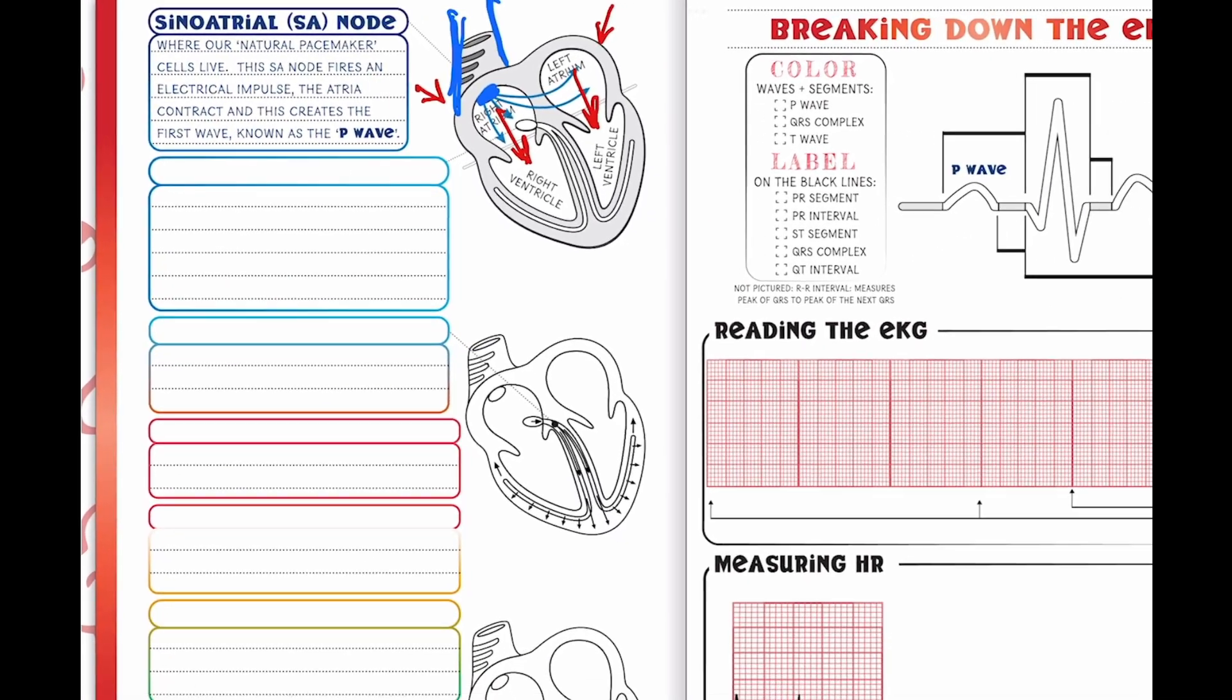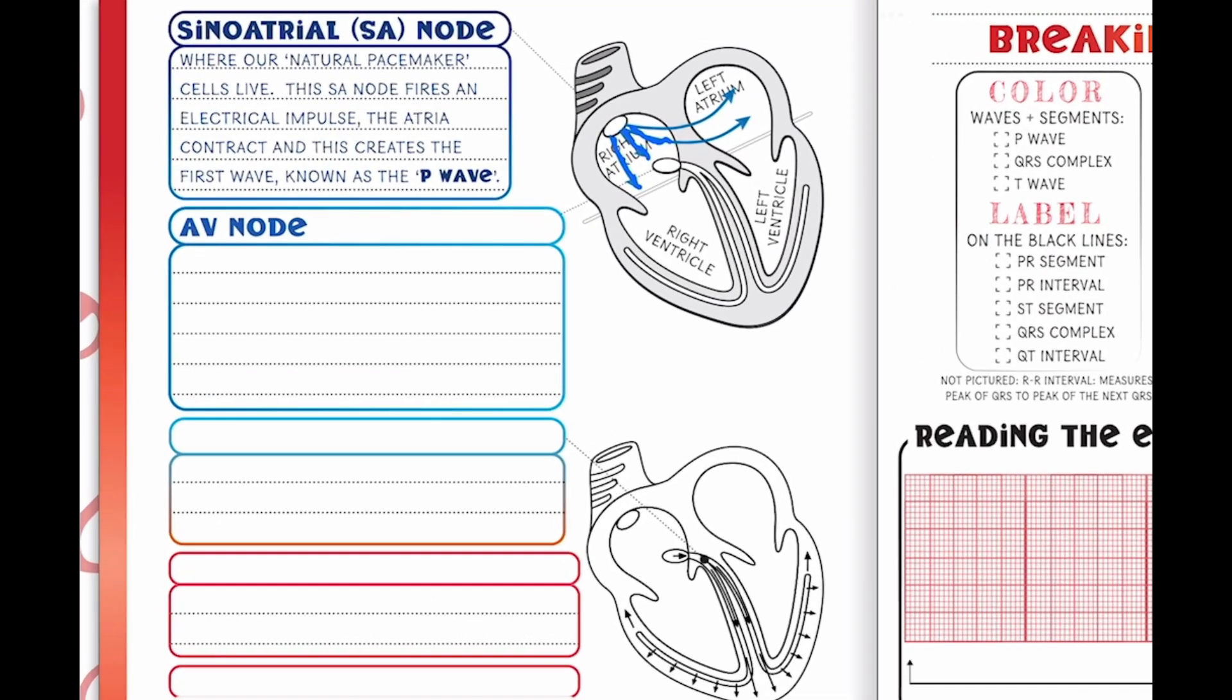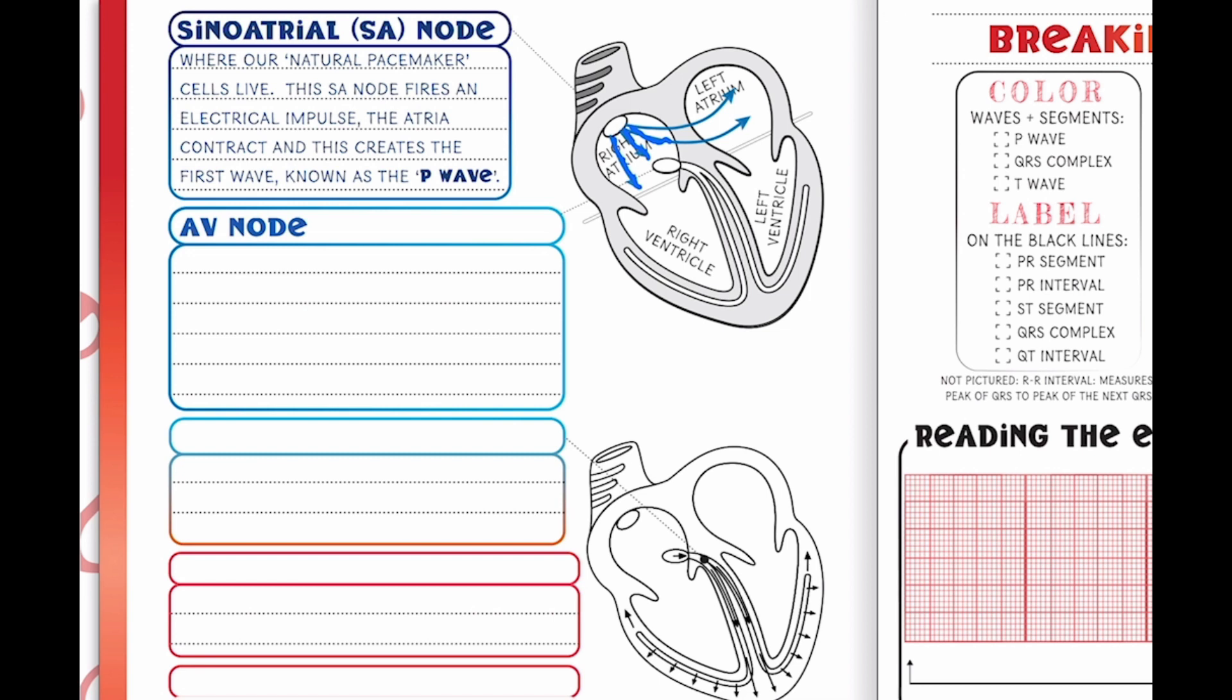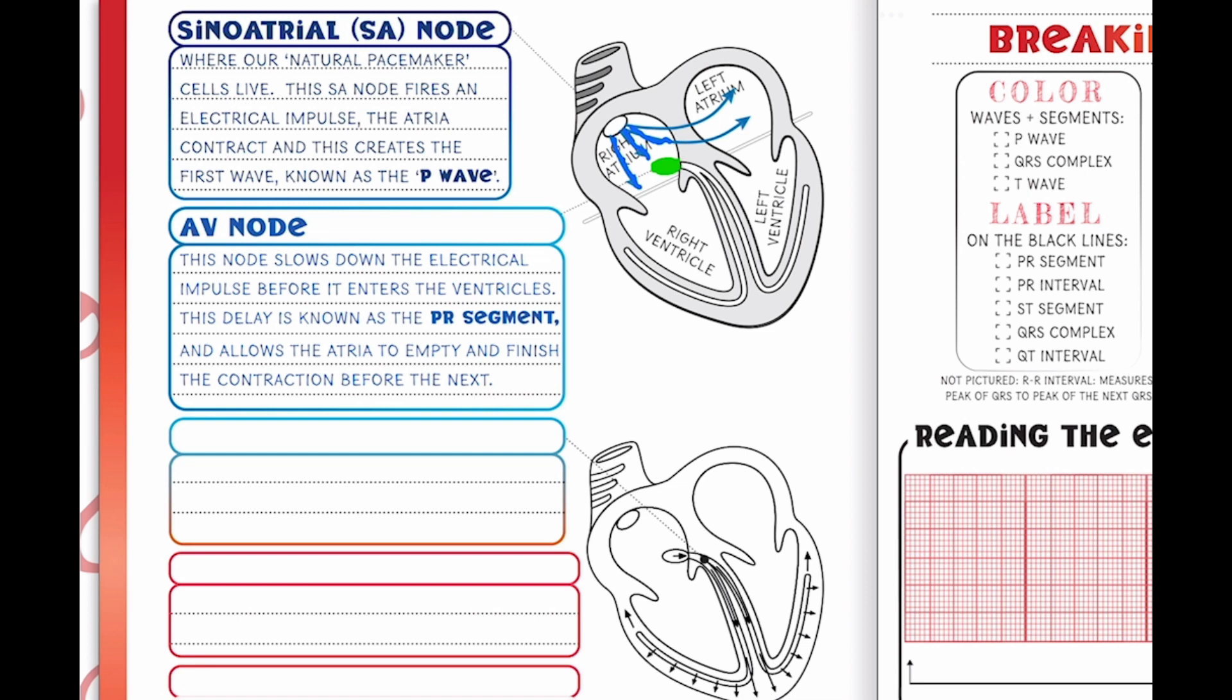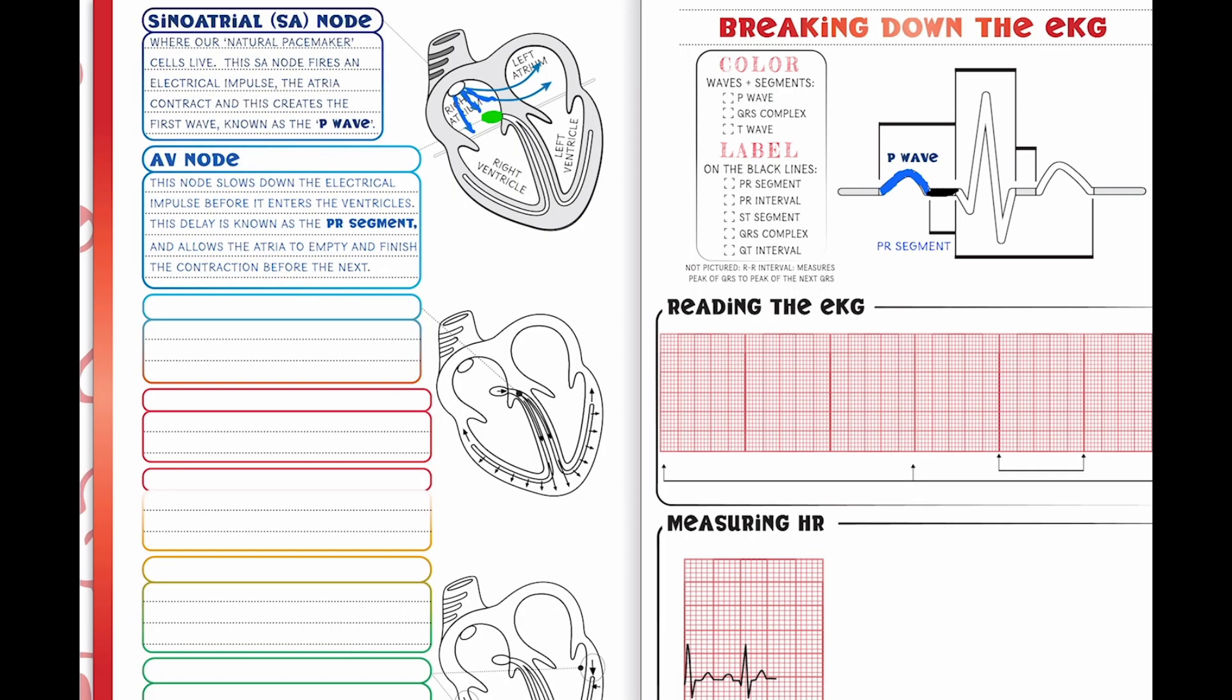So this first contraction is going to be known as our P wave. Then these electrical impulses are going to reach our AV node or our atrioventricular node, and this is going to be located in the lower part of the right atrium near the center of the heart. This AV node is going to briefly delay the electrical signal before passing it on, and this delay is known as the PR segment which we can see right here after our P wave. So this line is what represents that AV node delay. The reason for the delay is so our ventricles have enough time to fill up with blood from the contracting atria so they can contract and send the blood out.